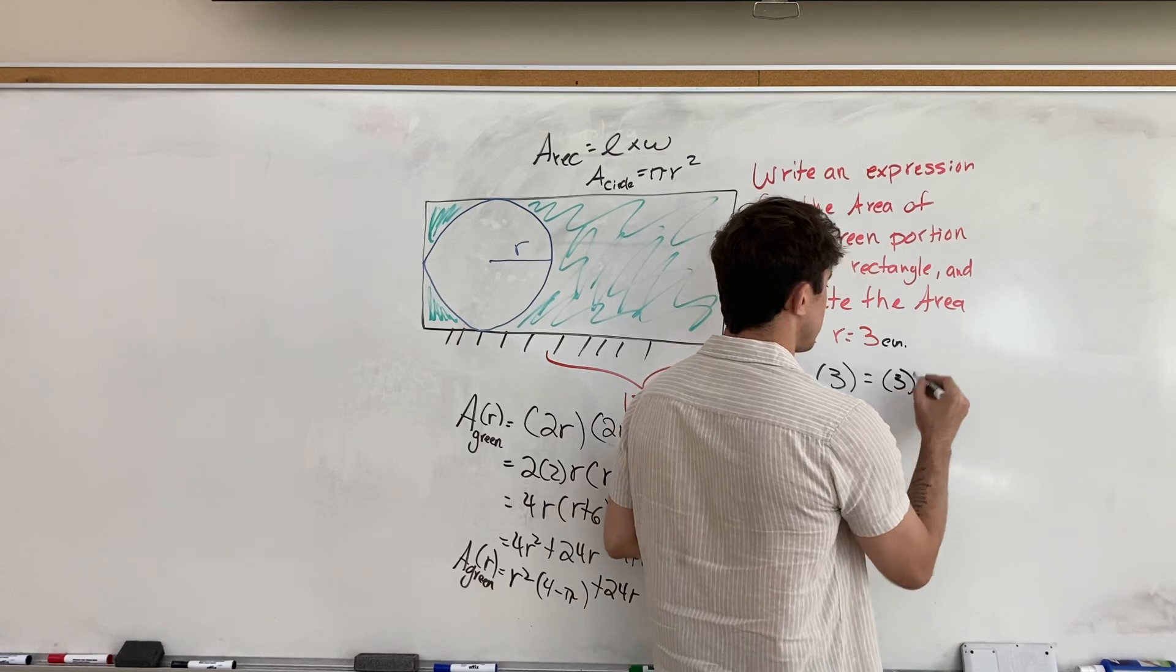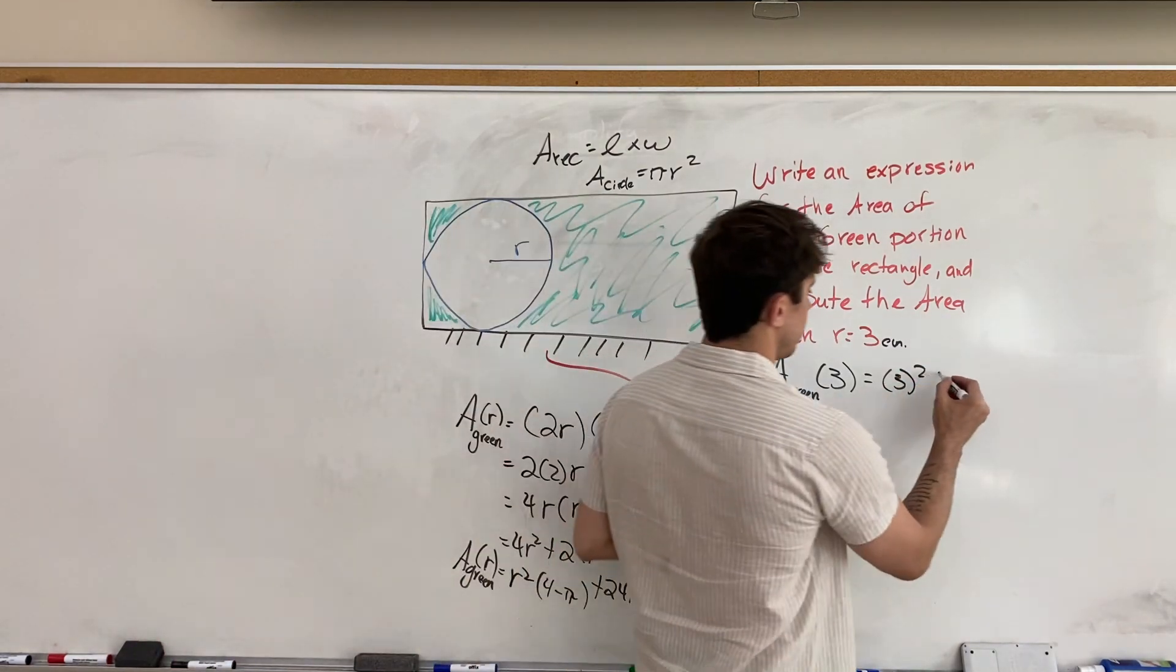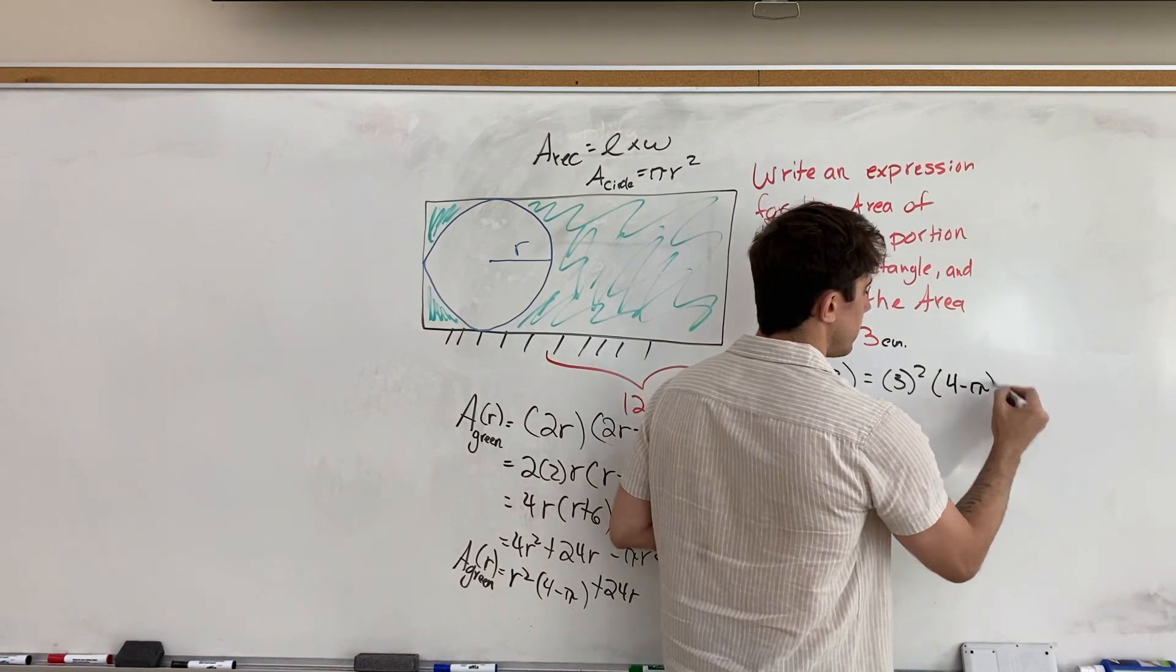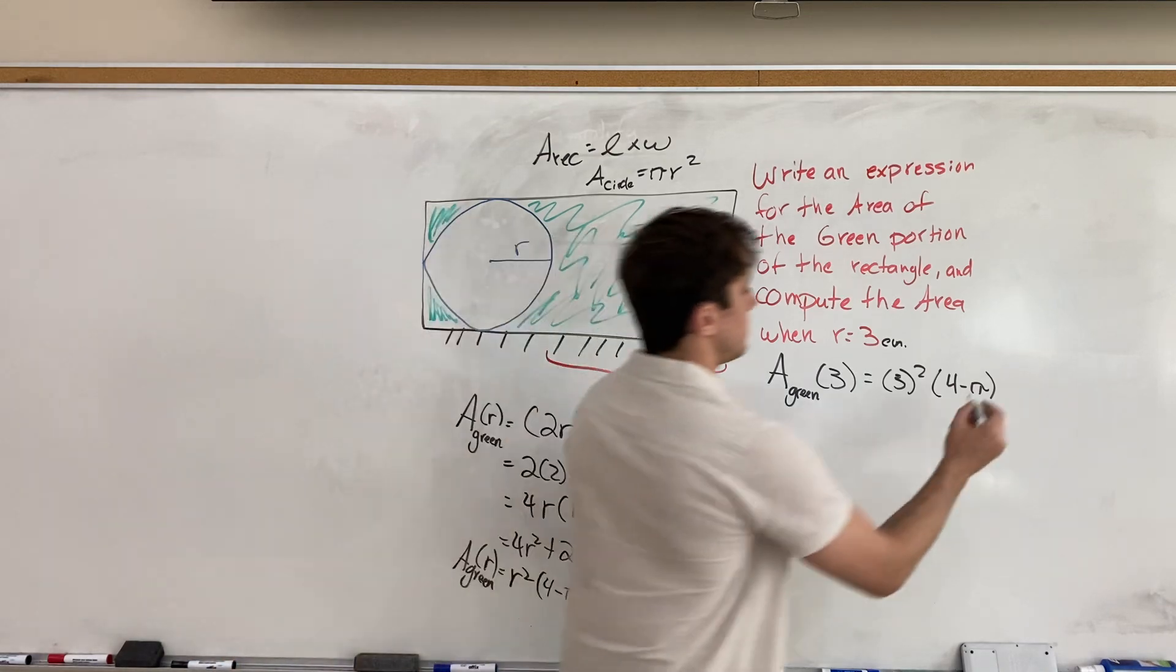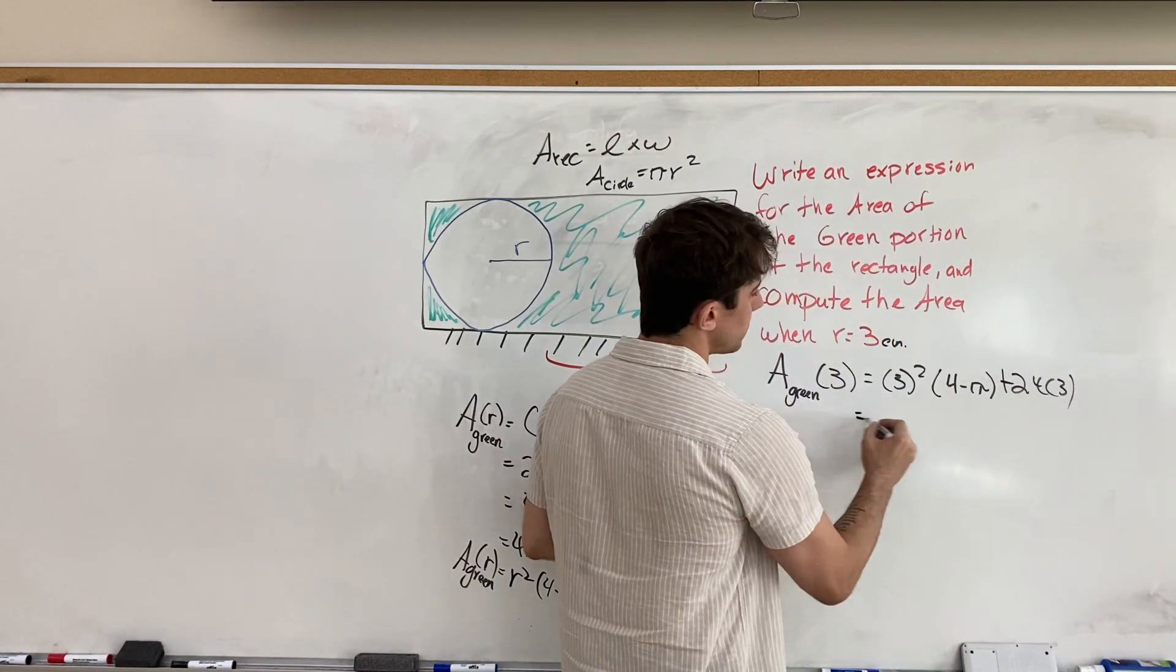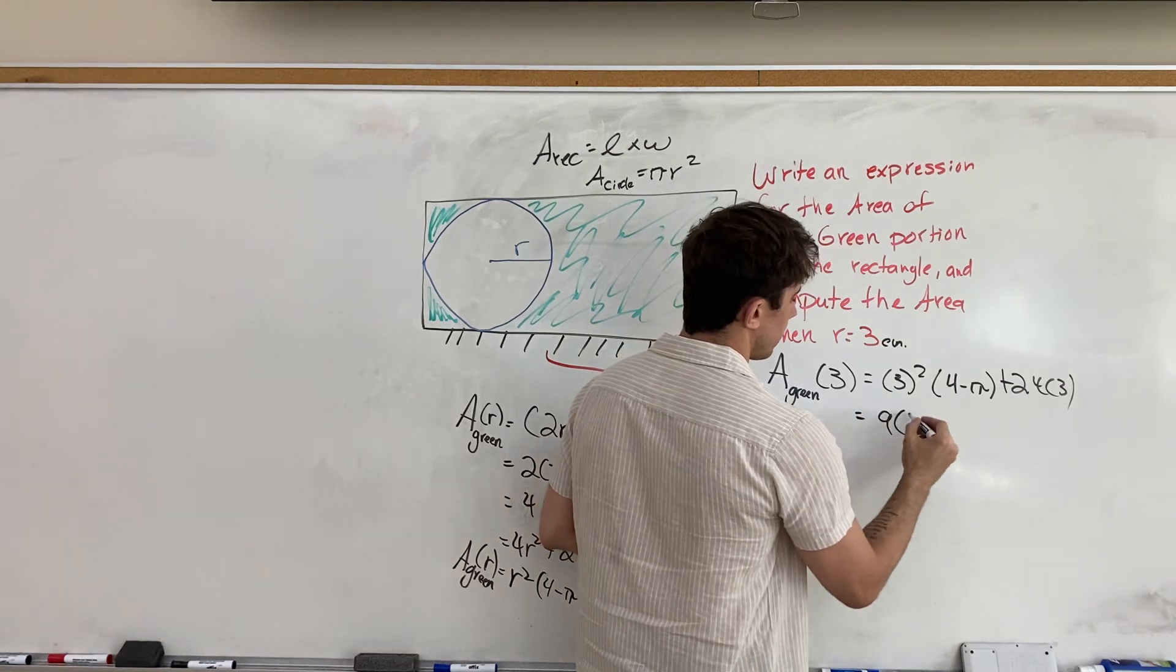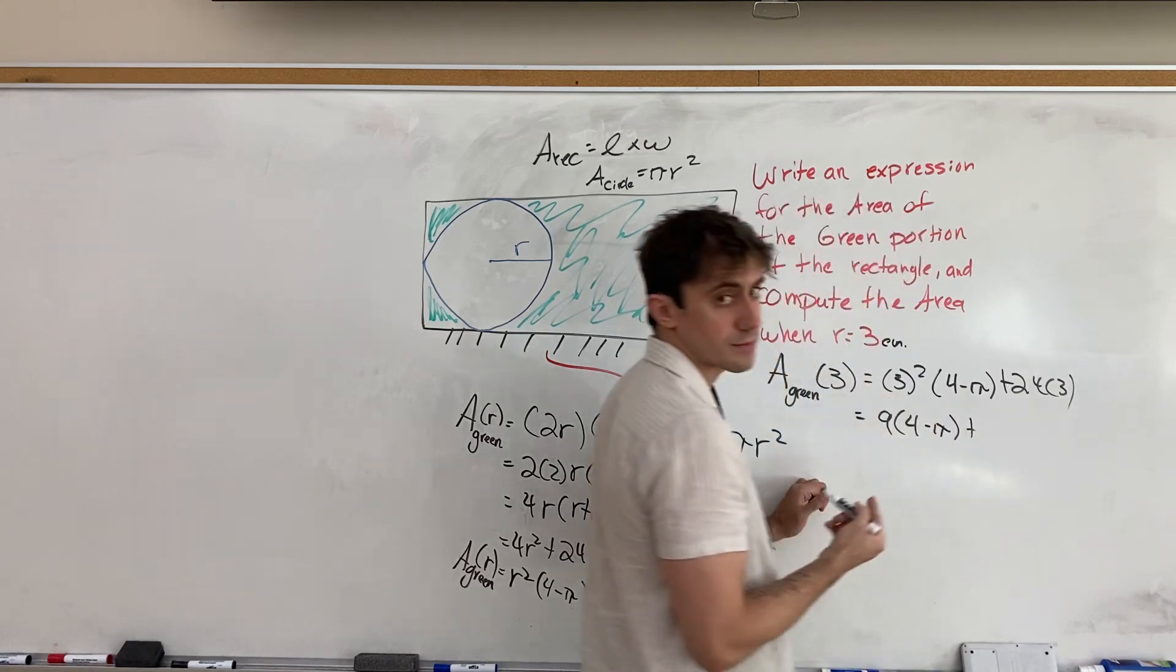And now we're just plugging 3 in for r everywhere. So, we'll have 3 squared, r squared, 3 squared times 4 minus pi, plus 24r, so 24 times 3, like so. Which means we get 9 times 4 minus pi, plus 24 times 3, 72.